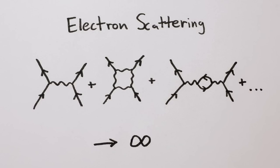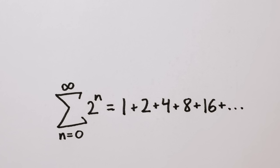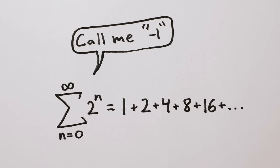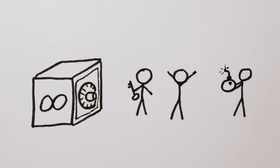But luckily, all is not lost. Because just as the series 1 plus 2 plus 4 plus 8 plus 16, etc. contains enough information to tell us that it really means negative 1, physicists use clever techniques to tease the real answer out of infinity.